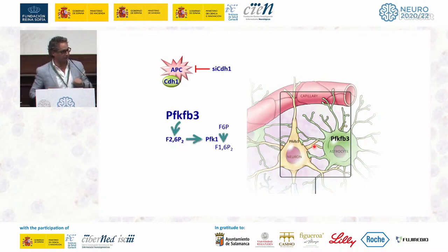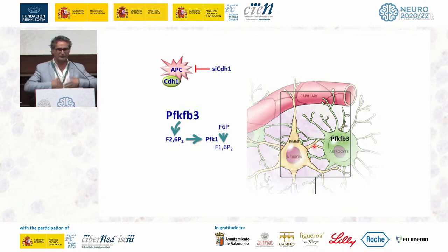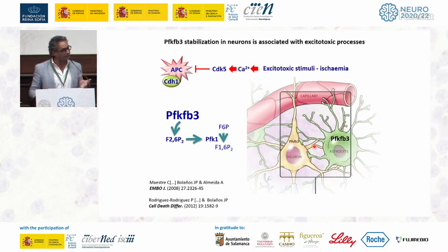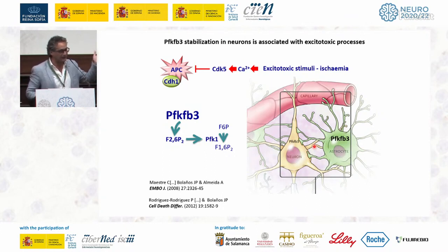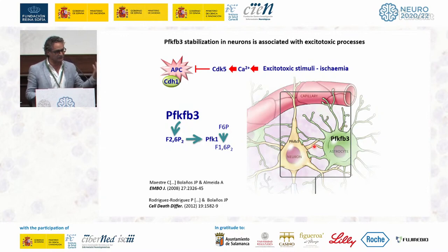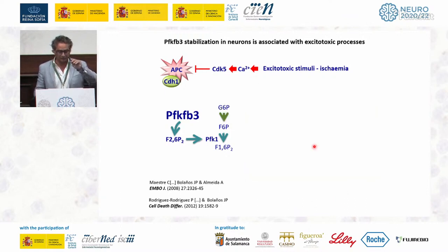Focusing on PFKFB3: when you silence CDH1, you stop the APC/C-CDH1 ubiquitin ligase, PFKFB3 becomes stabilized, and you get activation of PFK1 and glycolysis in neurons. There are other conditions that endogenously stabilize PFKFB3, such as excitotoxic stimuli — NMDA receptor stimulation, glutamate receptor stimulation — and also in ischemia. We deciphered the mechanistic pathway: it is a calcium-mediated, CDK5-mediated mechanism that hyperphosphorylates CDH1, removes it from APC, and stops labeling PFKFB3 for degradation. So PFKFB3 stabilization in neurons is associated with excitotoxic processes.